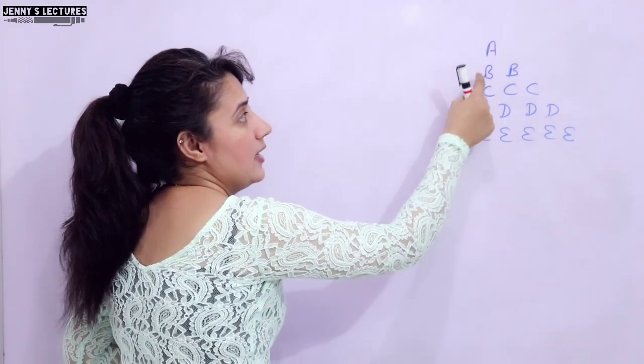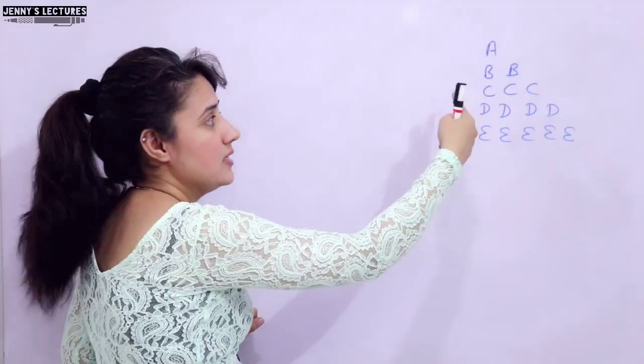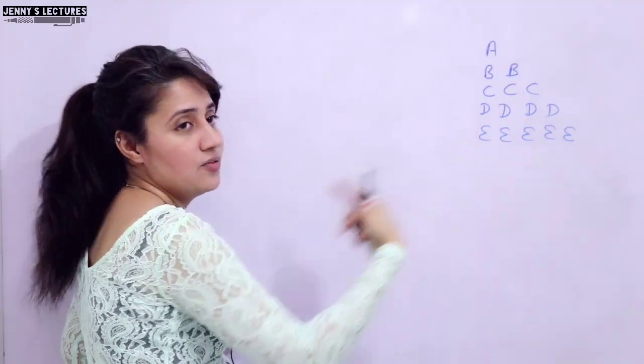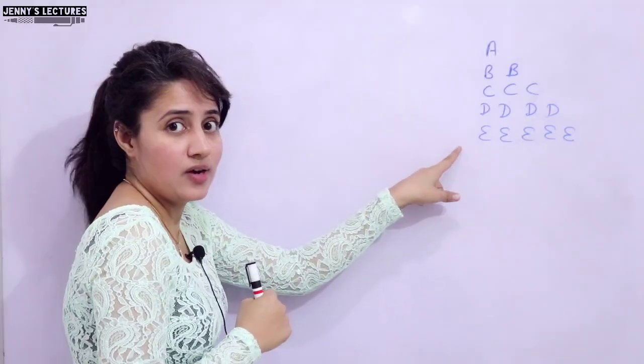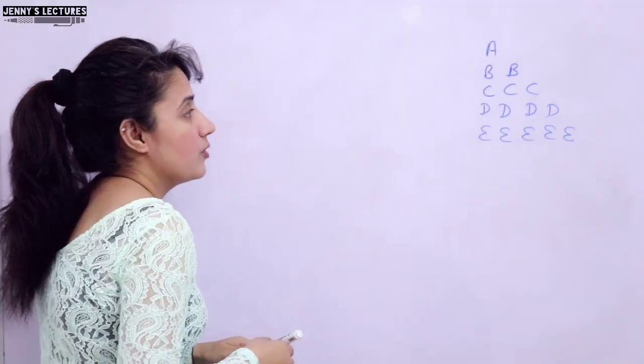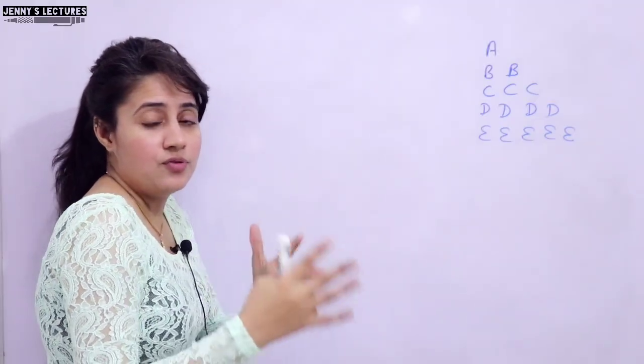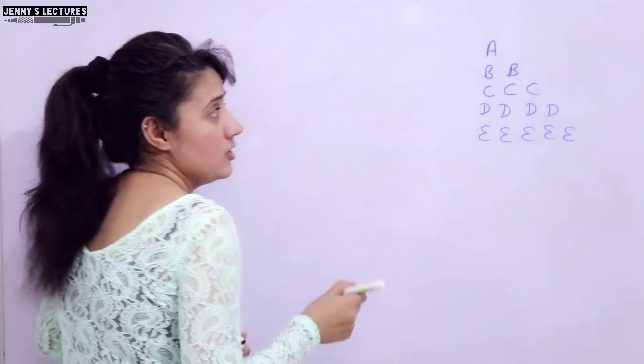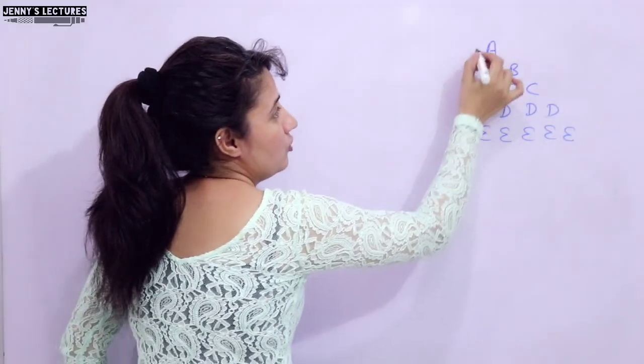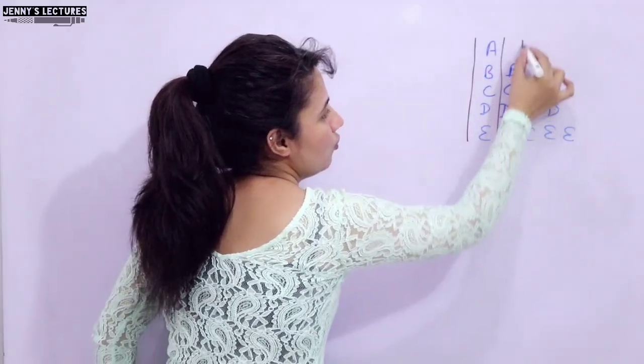Here we are printing A, in second line B B, then C C C, then D four times, then E five times. Like this you can print multiple lines. Here I'm taking only five lines. If you want to take 5, 10, 15 lines, then that also I'll show you when we discuss it on my laptop.